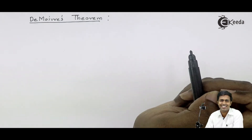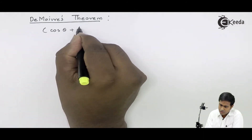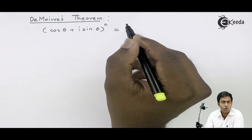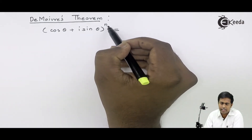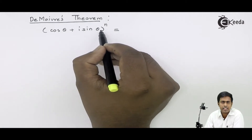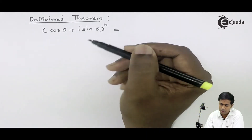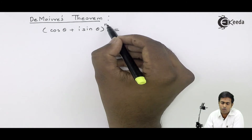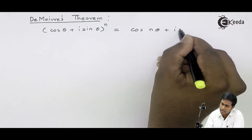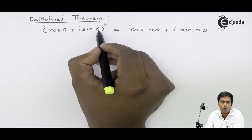What Abraham De Moivre says — according to him, if you want to find out the power or root of a complex number, let's say it is n, where n is any rational number — meaning it can be a whole number or a fraction. So cos θ + i sin θ is a complex number and we are trying to find the power of this complex number. De Moivre says whenever you find a power of a complex number, it will become cos(nθ) + i sin(nθ). It means your power will multiply the amplitude of the complex number.